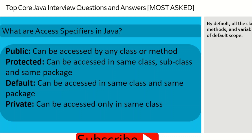What are the access specifiers in Java? There are four types. Public: accessible by any class or method. Protected: accessible in the same class, subclass, and same package. Default: if no specifier is defined, it is accessible in the same class and same package only — not in subclasses, which is the key difference from protected. Private: the most restrictive; accessible only within the same class.